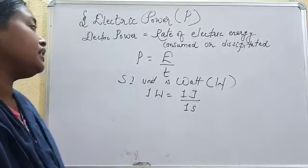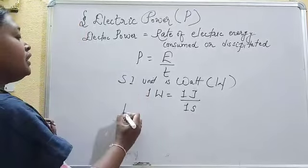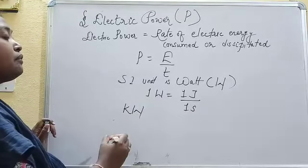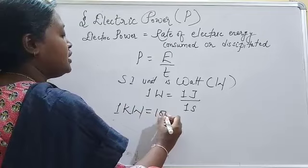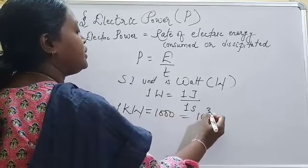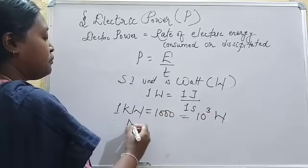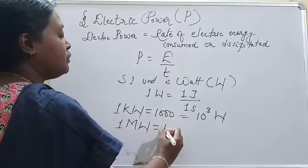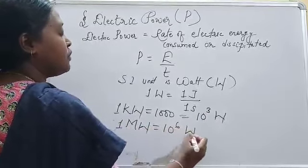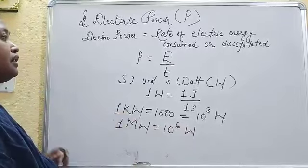Other unit of power is kilowatt, the bigger unit of power. 1 kilowatt equals 1000 or 10 to the power 3 watt. Bigger than this is megawatt. 1 megawatt equals 10 to the power 6 watt. These are the units of power.